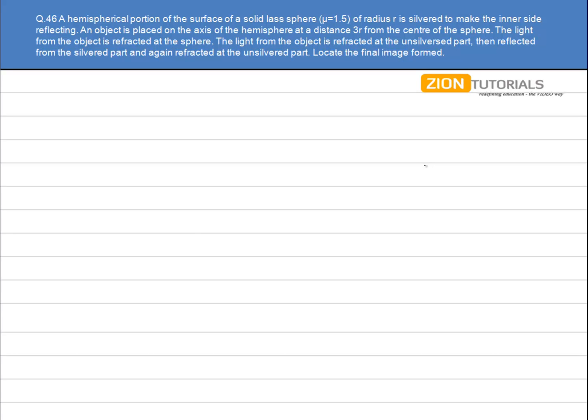A hemispherical portion of the surface of a solid sphere of radius r is silvered to make the inner side reflecting. An object is placed on the axis of the hemisphere at a distance 3r from the center of the sphere.